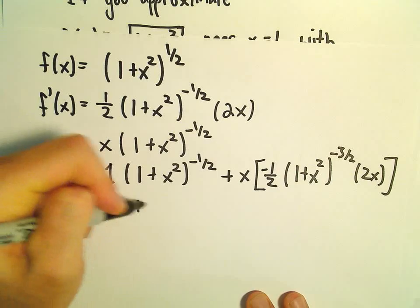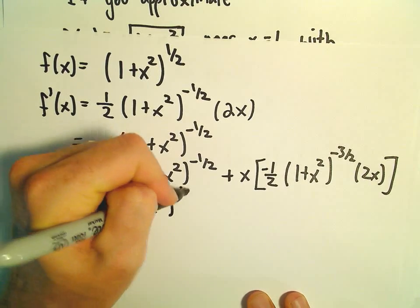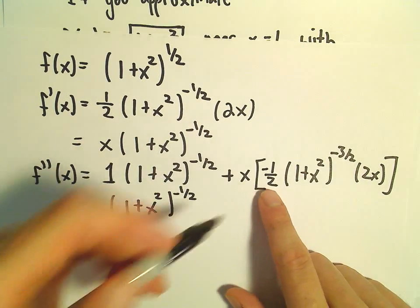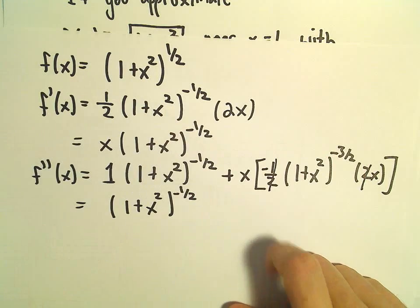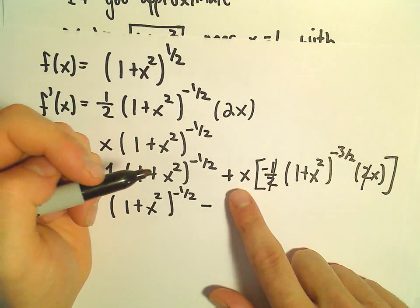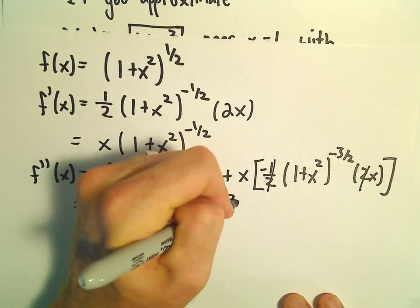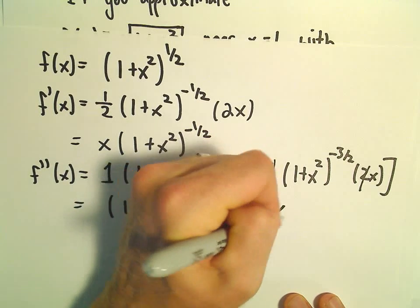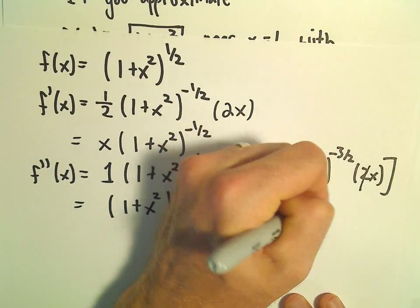So let's see if we can't clean this up a little bit. So 1 plus x squared to the negative 1 half. It looks like the 1 half and the 2 will cancel. We'll still have a negative. We have an x and an x, so x squared. Then we have 1 plus x squared to the negative 3 halves power.